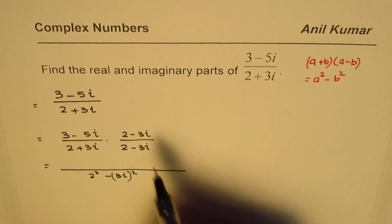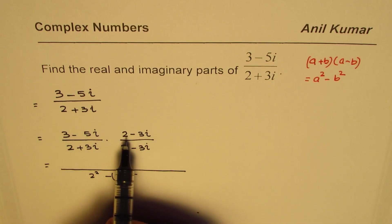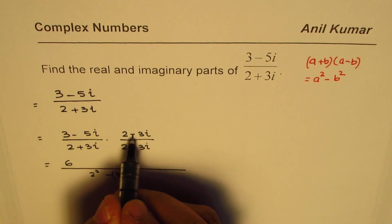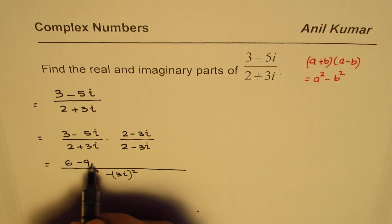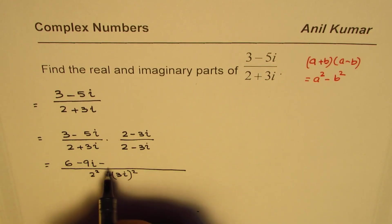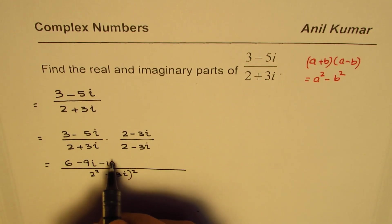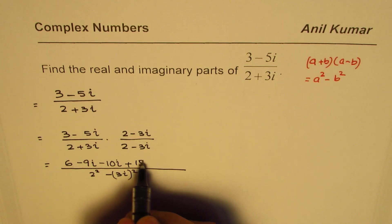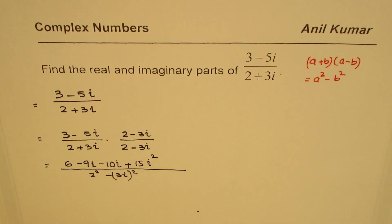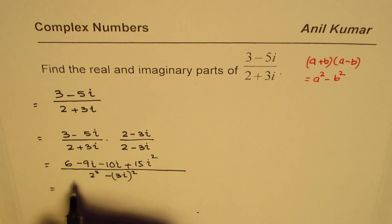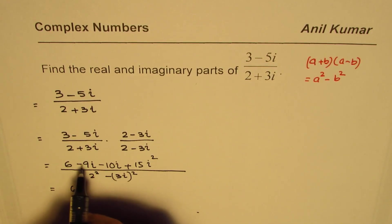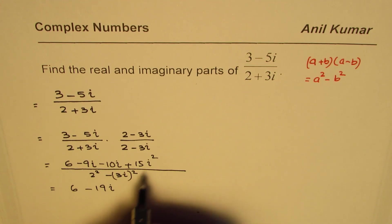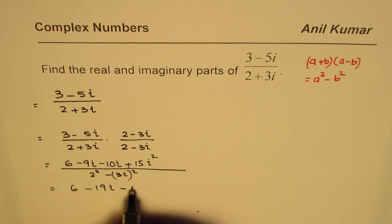In the numerator, we use the distributive property: 3 times 2 is 6; 3 times minus 3i is minus 9i; minus 5i times 2 is minus 10i; and minus 5i times minus 3i gives plus 15i squared. Since i squared equals minus 1, that 15i squared becomes minus 15.